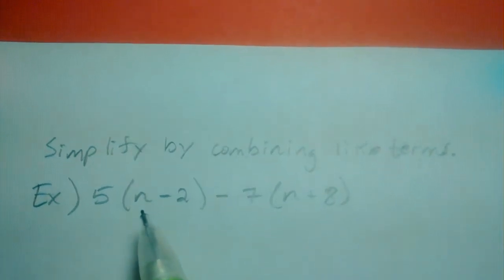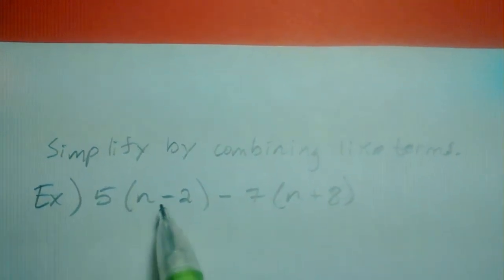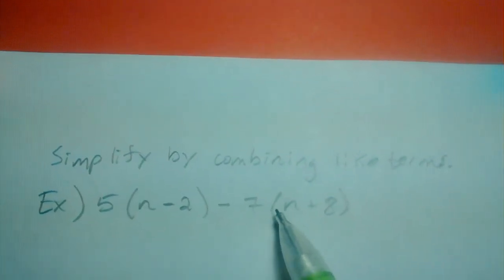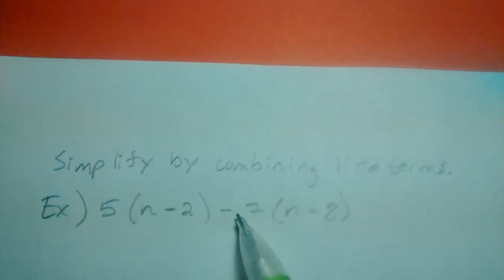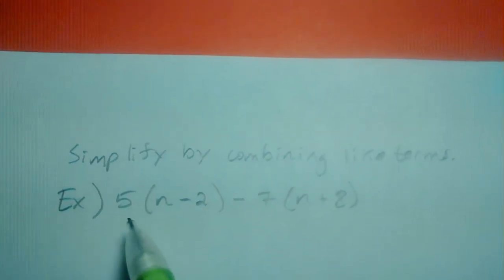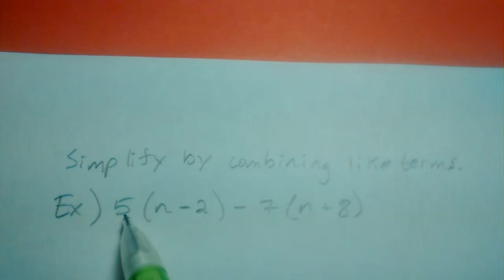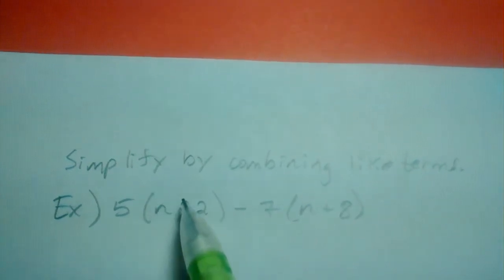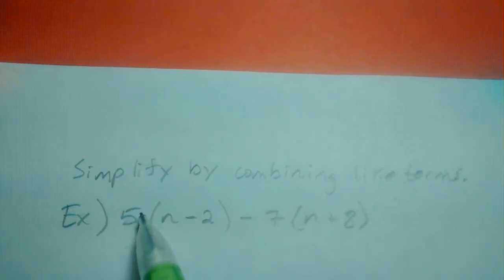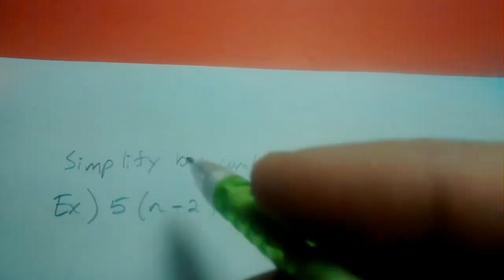The way to proceed is to undo these parentheses by performing the operation here, which is multiply, and then performing the operation here, which is a subtraction of 7 multiplied with this. So using the distributive property with 5 and distributing it over the subtraction would mean 5 times n and then 5 times 2 and subtracting their results.